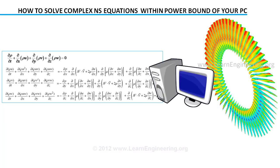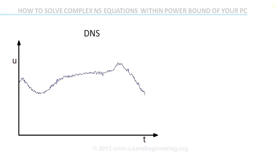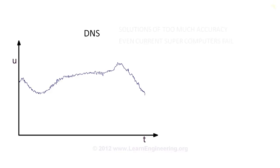As we discussed in the first lecture, exact solution of NS equations is too much accuracy. It captures every minute detail of turbulent flow. But an engineer is not interested in such a solution; what he needs is an average solution like this.